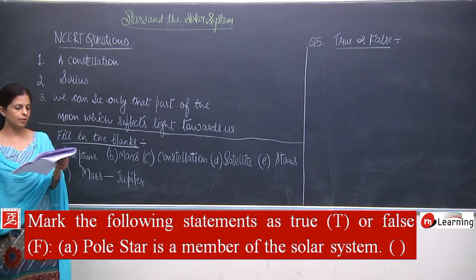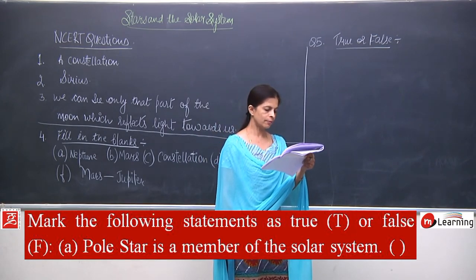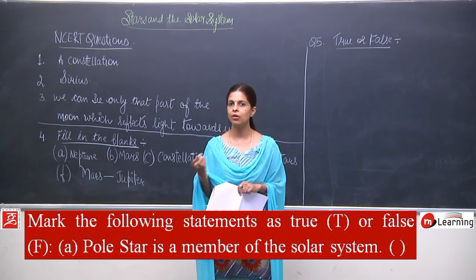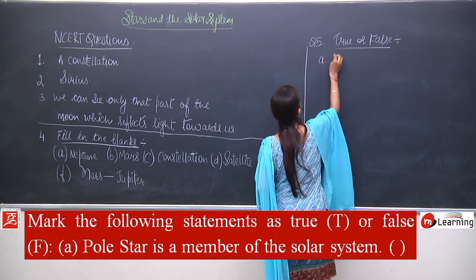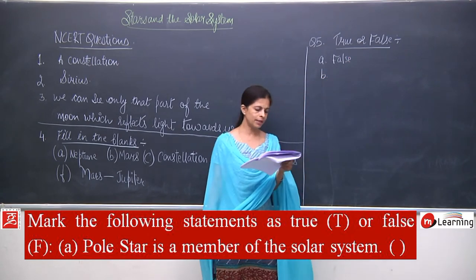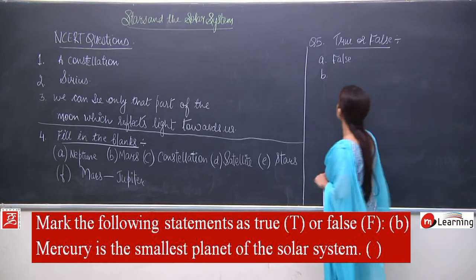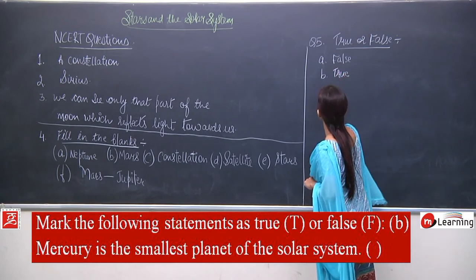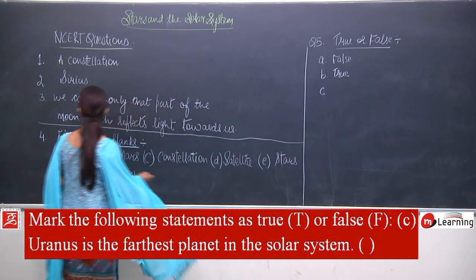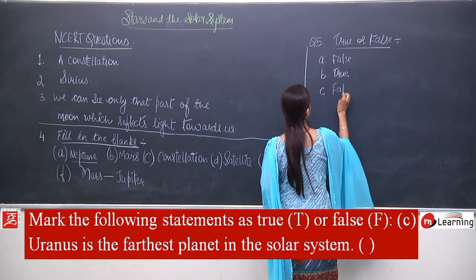Now true or false. A: the pole star is a member of the solar system — as soon as the word 'star' comes, we understand it is not part of the solar system. So A is false. B: Mercury is the smallest planet of the solar system — very correct, this is true. C: Uranus is the farthest planet in the solar system — we discussed that Neptune is the farthest one. So this is false; the correct answer is Neptune.